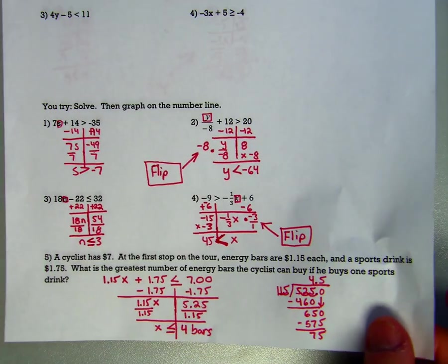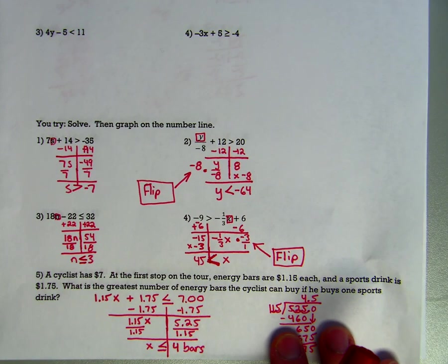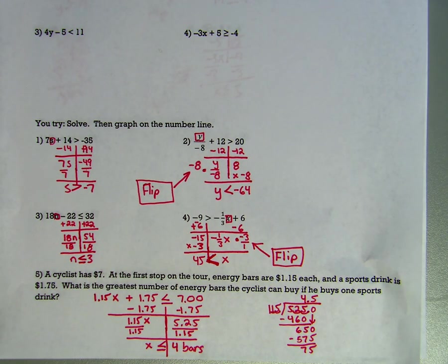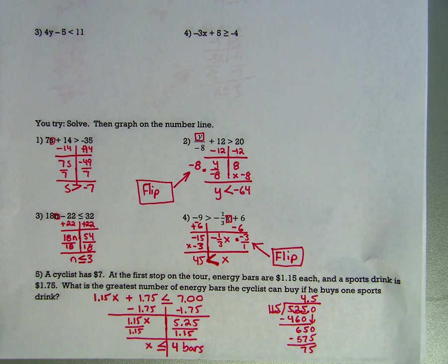Here are the answers for your five problems. Number 1: 7s plus 14 is greater than negative 35. Subtract 14, giving negative 49, then divide by 7, and s is greater than negative 7.